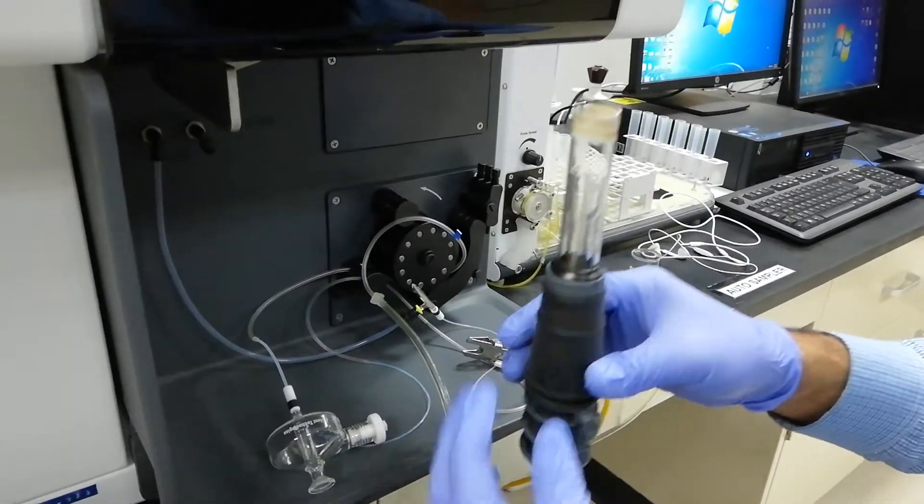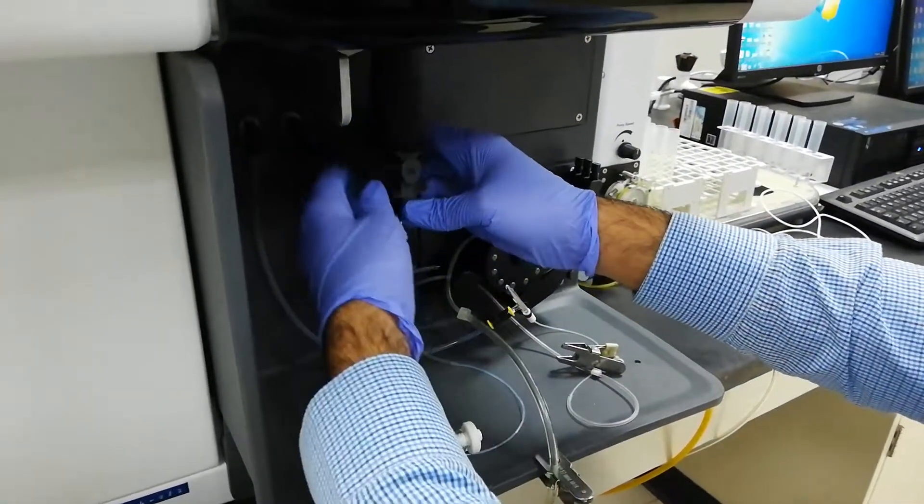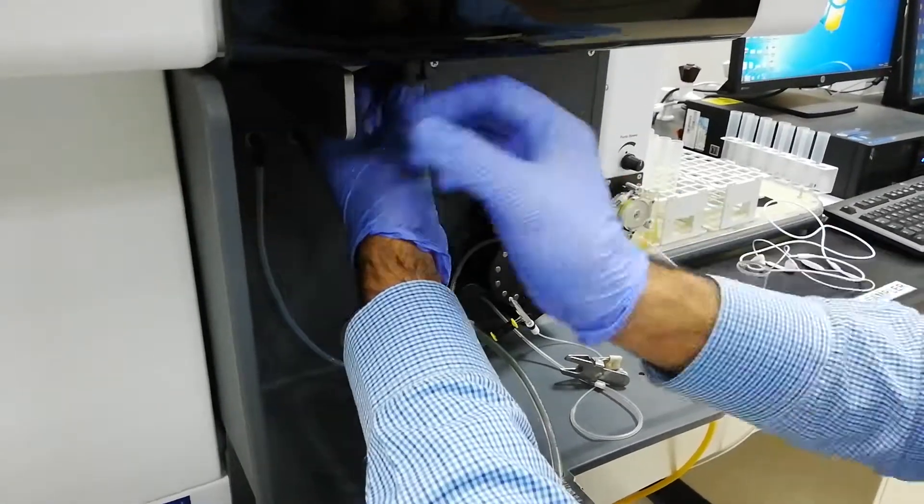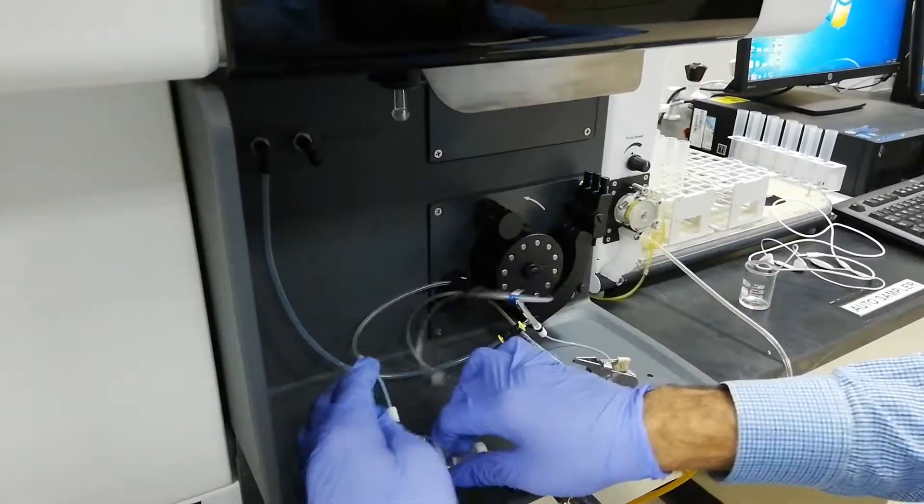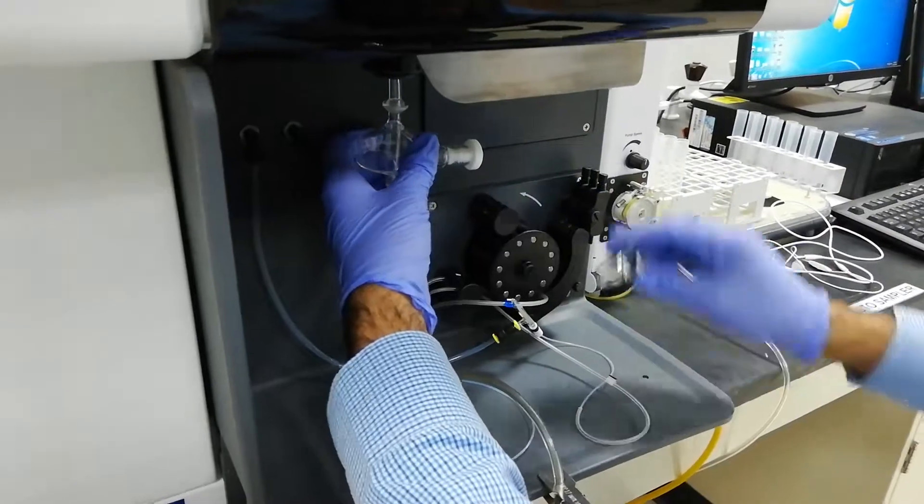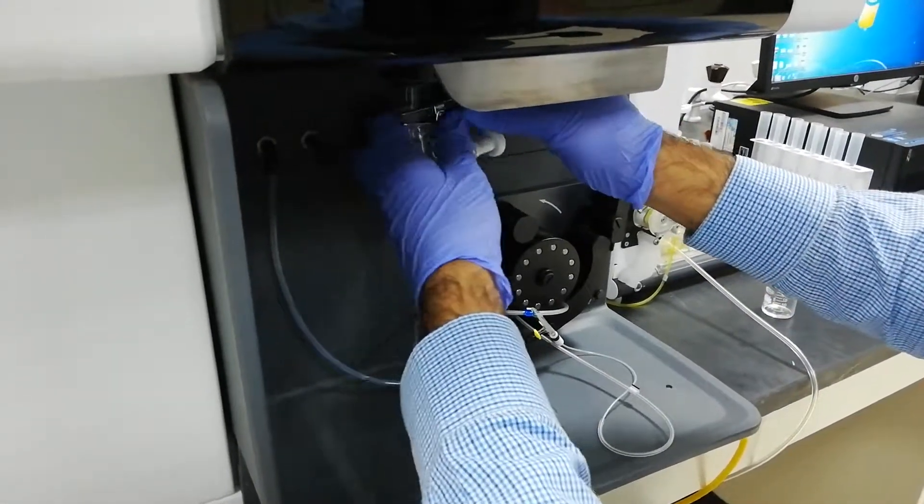So now, in front of you, I will install the torch. Here, you can install the torch, then close it, then put the spray chamber like this, tighten the screw.